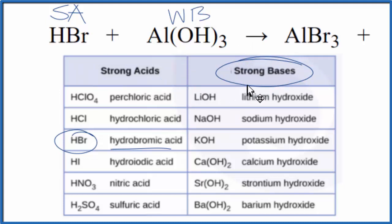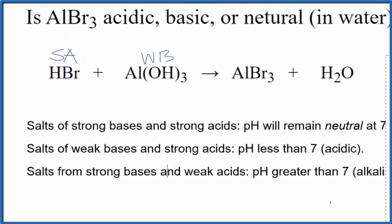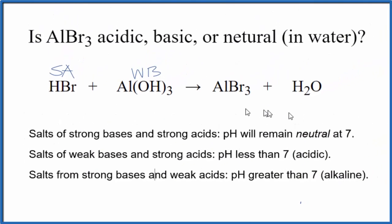So we have the strength of the acid and the base. Now we can use the rules to figure out whether we have acidic, basic, or neutral solution. Strong acid, weak base. Here's a strong acid and a weak base. That means, according to our rules, the pH is going to be less than 7. We'll have an acidic solution.